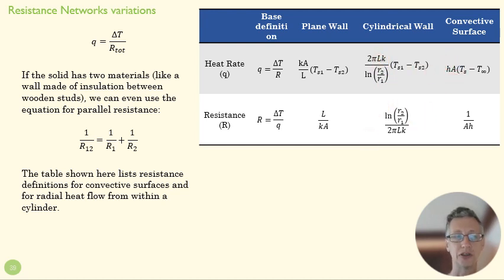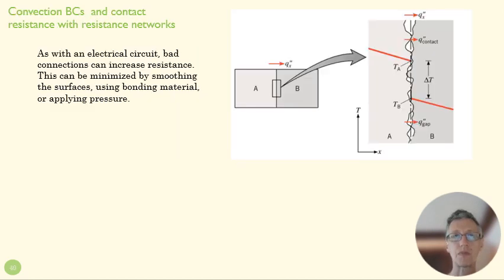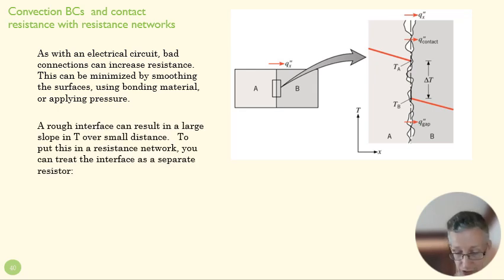One last little trick with this is, like with an electrical circuit, we can have a bad connection between materials in conduction. A rough interface is actually going to impede conductance because air is really resistant to conductive heat exchange. And so this essentially is like adding another resistor. So we can decide here that there's an R_contact, and we can add that in our R series.